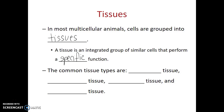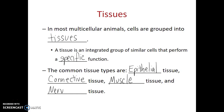There are four common tissue types: epithelial tissue and connective tissue, among others. In our next video, we'll talk in more detail about these four types of tissues.